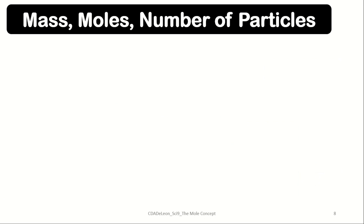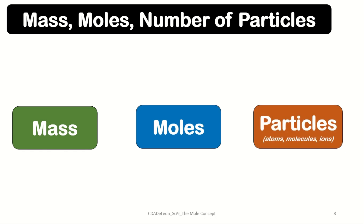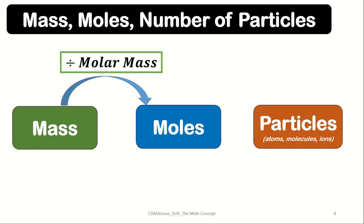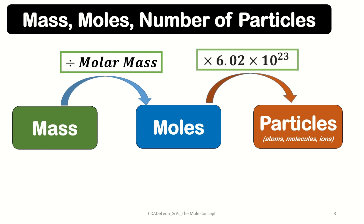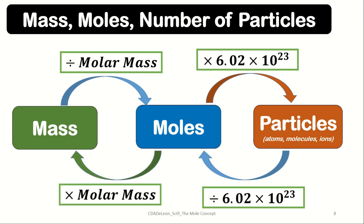So how are mass, moles, and number of particles related to one another? All stoichiometric conversions among these quantities work as follows: to convert mass to moles, divide by the molar mass; to convert moles to particles, multiply by Avogadro's number (6.02 × 10²³); to convert particles to moles, divide by 6.02 × 10²³; and to convert moles to mass, multiply by the molar mass.